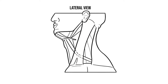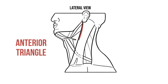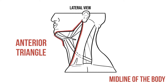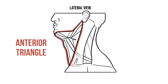In front of SCM is the anterior triangle. This is bordered superiorly by the mandible and medially by the midline of the body. There are several important structures that can be found in this triangle, but to see these more clearly we need to move to an anterior view.